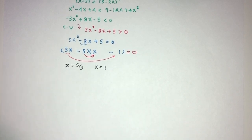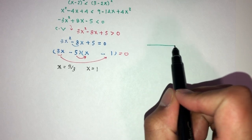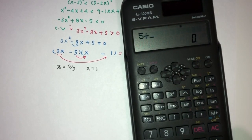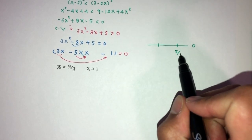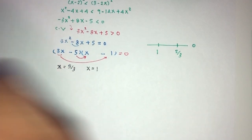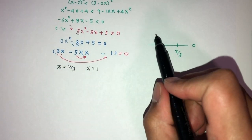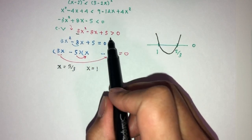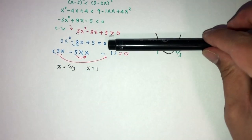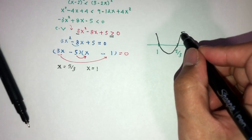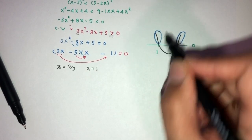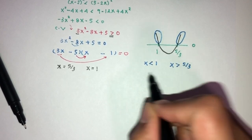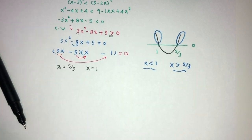Marking these on a number line: since 5/3 > 1, the order is x = 1 then x = 5/3. Because the quadratic 3x² − 8x + 5 has a positive leading coefficient, it has a minimum (U-shape). We need the region where it is greater than 0, which is outside the roots: x < 1 or x > 5/3.